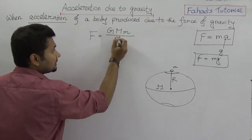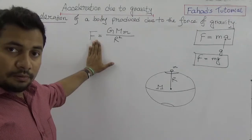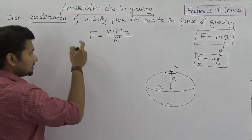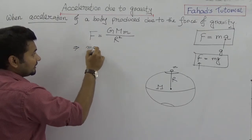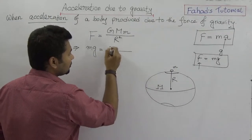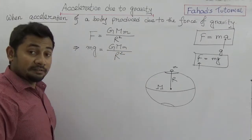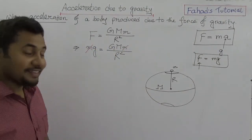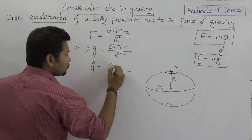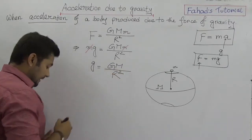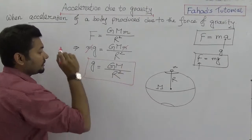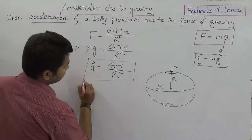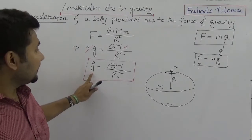From the gravitational force equation and from F = mg, we can equate: mg = G·M·m / r². We can cancel small m from both sides, giving us the acceleration due to gravity: g = G·M / r². This is the equation for the acceleration due to gravity.